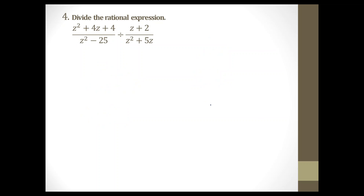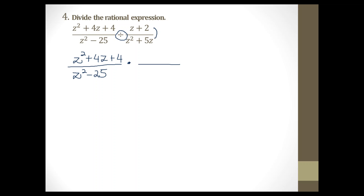Question number 4: divide the rational expression. When we have a division sign and two fractions, we use the method: keep the first fraction, change the sign to multiplication, and flip the second fraction. I'm going to do just that — keeping the first fraction, changing the sign to multiplication, and flipping the second fraction. We do that because we have no idea how to actually divide fractions, but keep-change-flip converts it to multiplication, which we do know how to do.